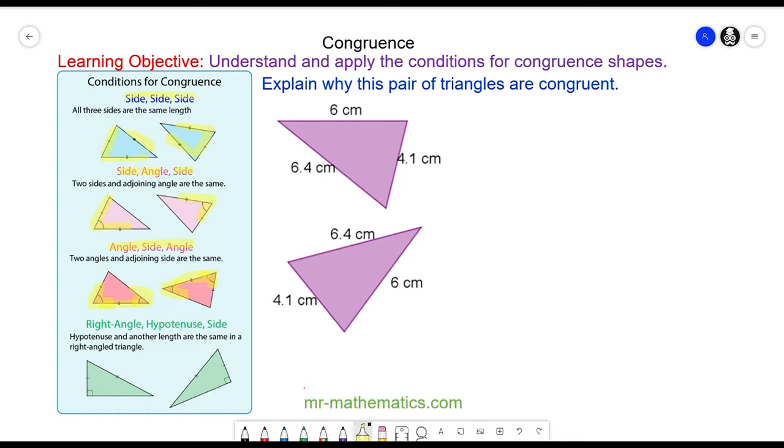And the final condition is right angle, hypotenuse, side. So this works with Pythagoras' theorem. You've got the hypotenuse is equal on both, plus another side is equal on both, and it's a right angle. This works because Pythagoras' theorem tells you that this side would be equal on both as well.